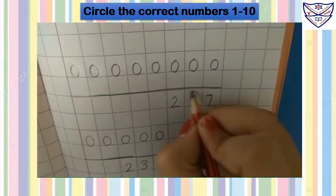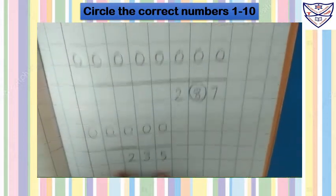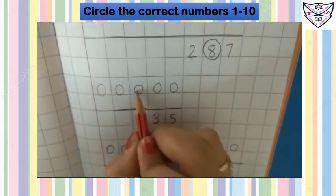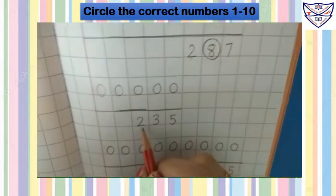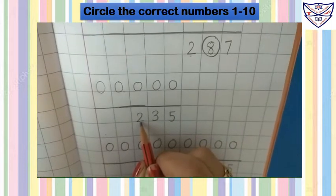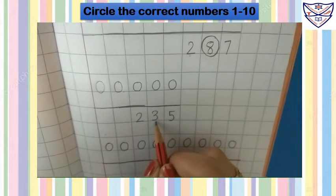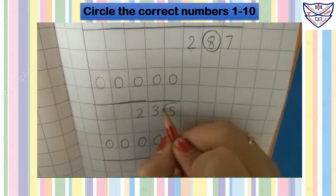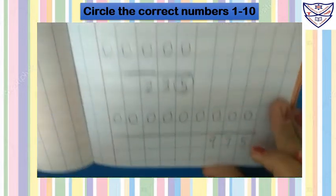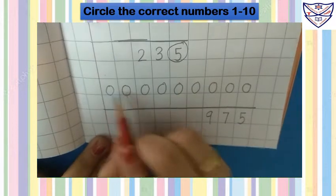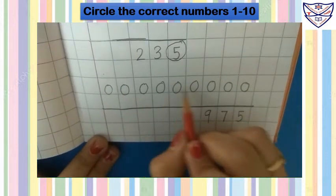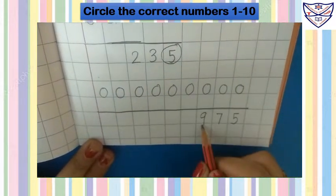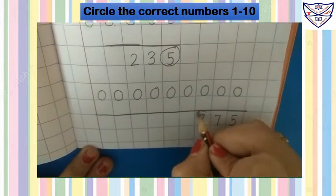Which number is this? It is 8, so we'll circle 8. Next: 1, 2, 3, 4, 5. Which number is this? It is 2, so we'll not circle 2. Which number is this? It is 3, so we'll not circle 3. Which number is this? It is 5, so we'll circle 5. Next: 1, 2, 3, 4, 5, 6, 7, 8, 9. Which number is this? It is 9, so we'll circle 9.